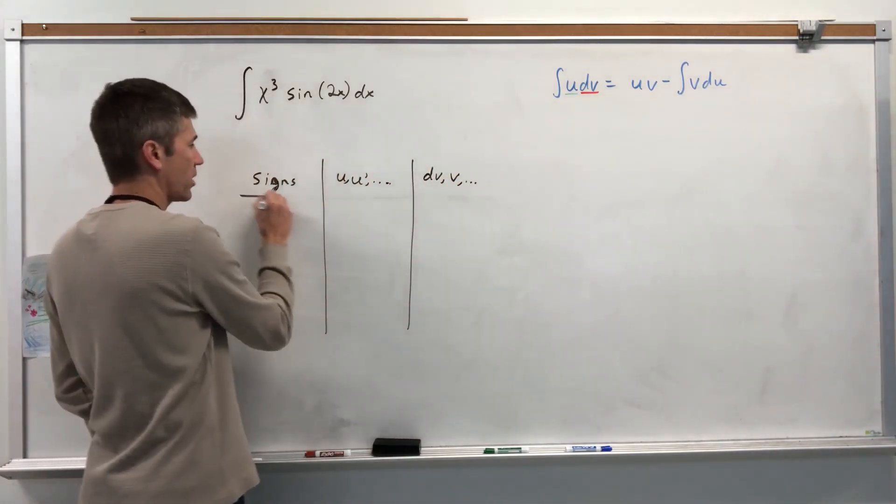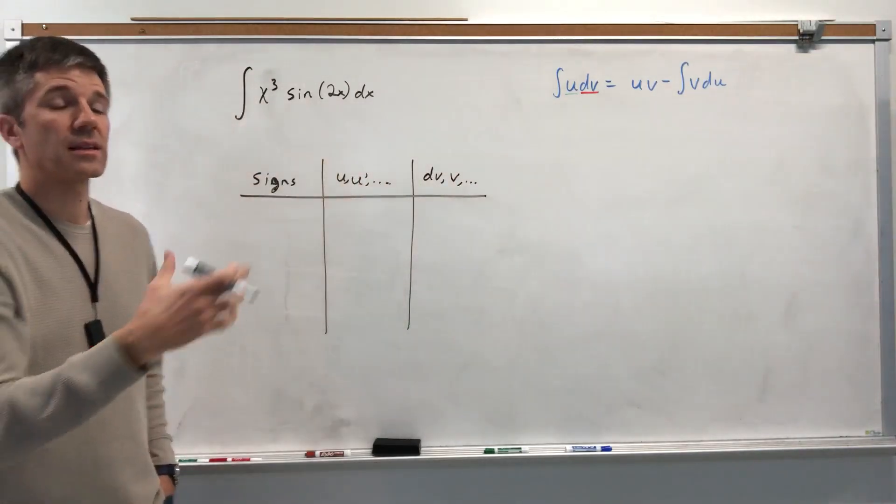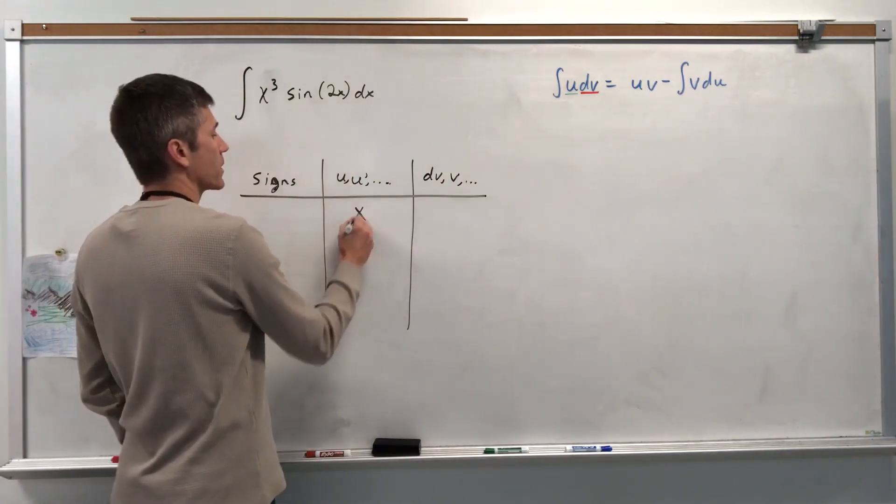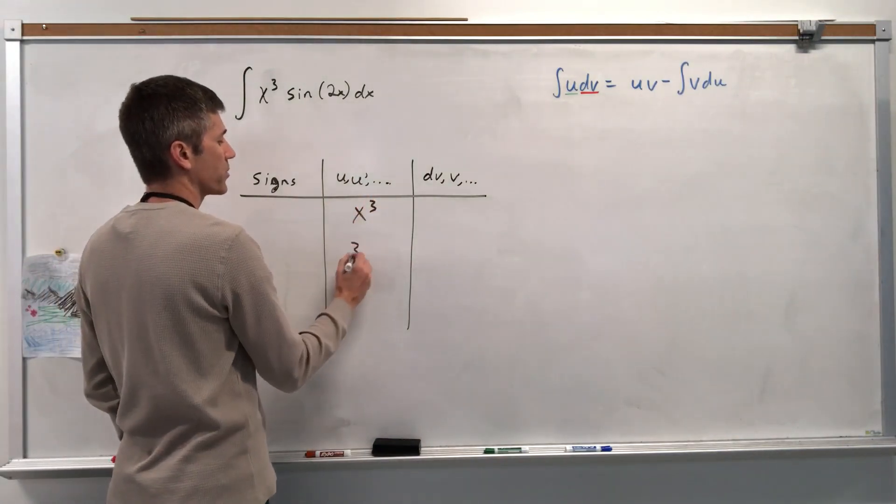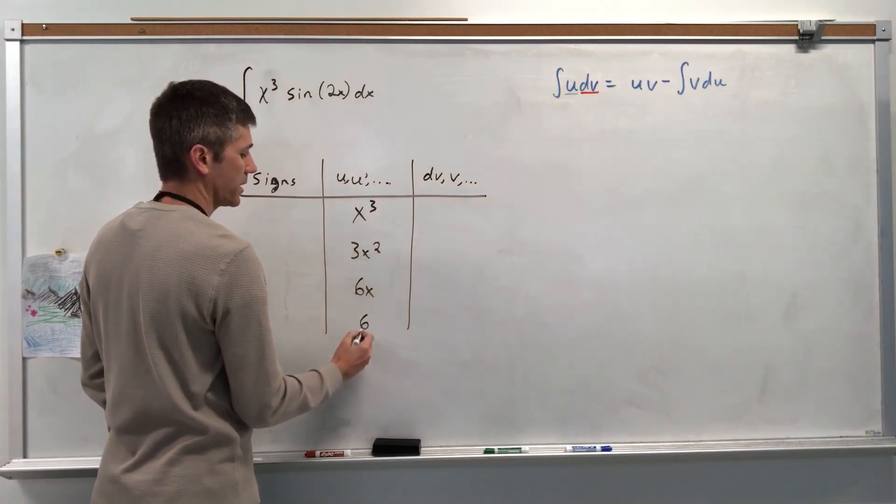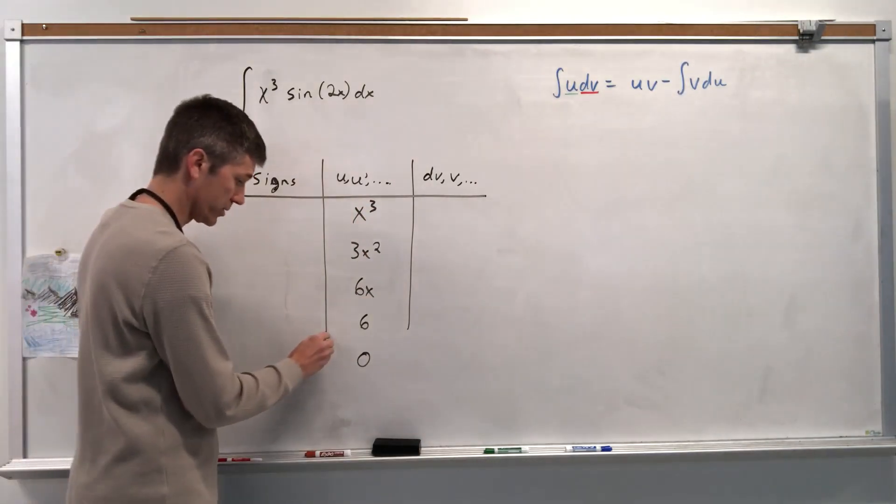We'll just start with u, which is x cubed. It's the thing that gets simpler the more you take the derivative of it. So x cubed, 3x squared, 6x, 6, 0, done. No more rows necessary.